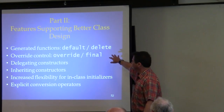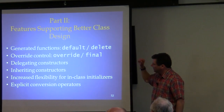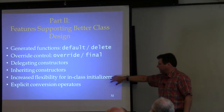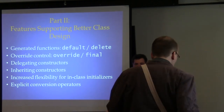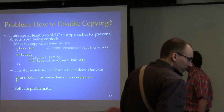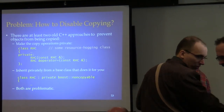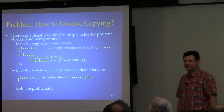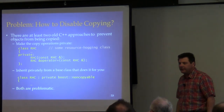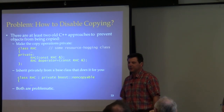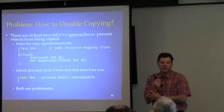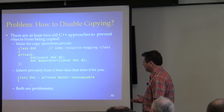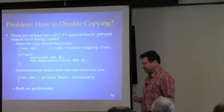We'll look at default, override, final keywords, delegating constructors, inheriting constructors, initialization of stuff in the class, and conversion operators. One of the ancient problems in C++ is how to keep it from letting you copy something. If you have a class, how do you disallow copying so that if a client tries to make a copy of an object, it just doesn't work?